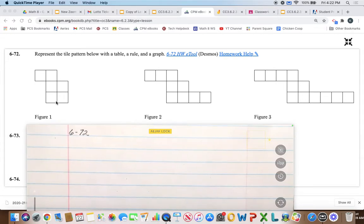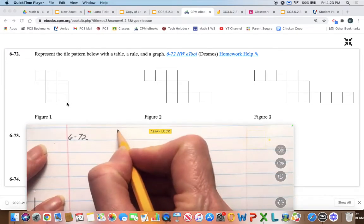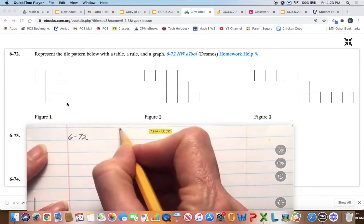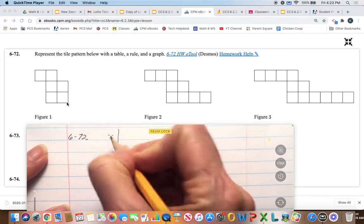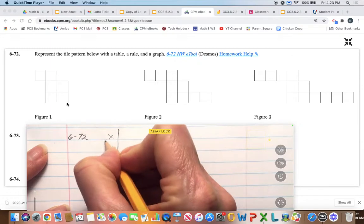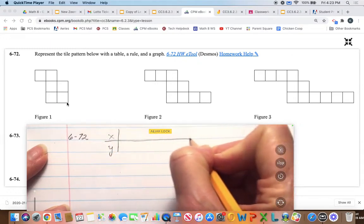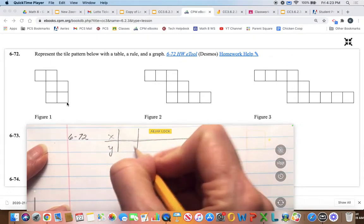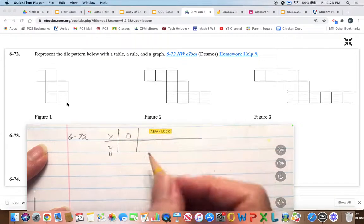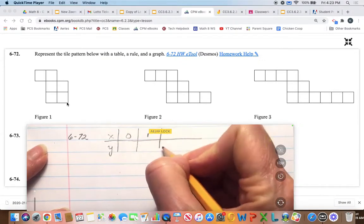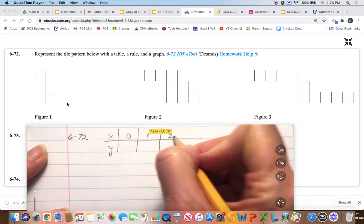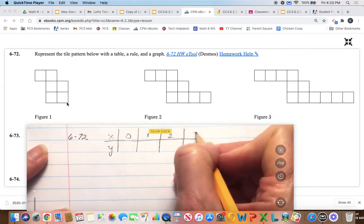One, two, three, four, five, six. Okay, so I'm just going to go ahead and start a table here, because I know I'm going to have x, and I'm going to have y, and I'm going to leave a space for figure zero, because we need to figure that out, and I'll go ahead and put in figure one, figure two, and figure three.